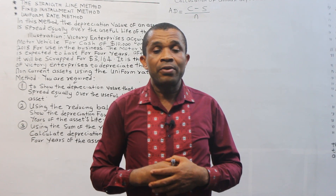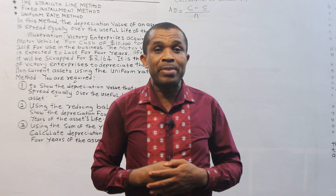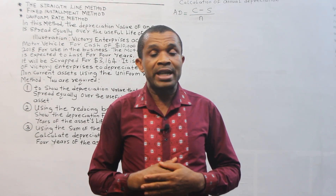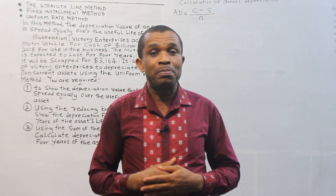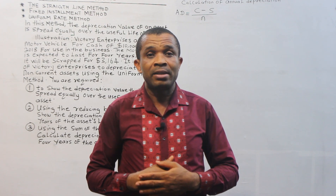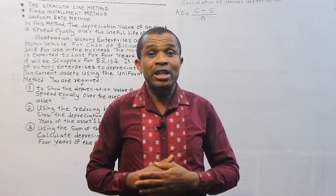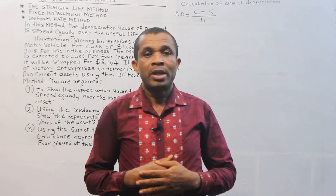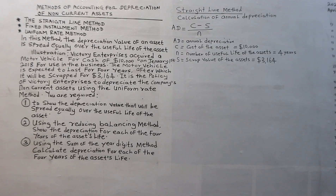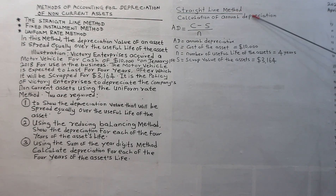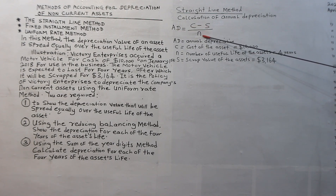In calculating annual depreciation using the straight line method, identify: the date of purchase of the asset and when the business ends its accounting period; the cost of the asset; the number of years the asset will last; and the scrap value of the asset, if any. With this information, you can carry out your computation. The annual depreciation formula is: AD = (C − S) ÷ N.